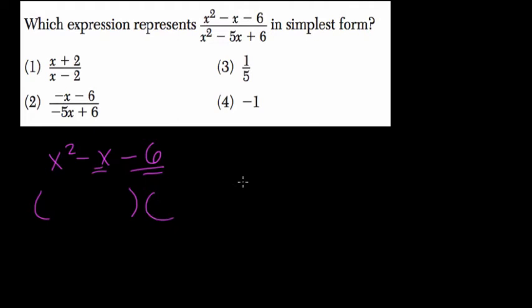What factors of negative 6 add to negative 1? Well, negative 3 times 2 is negative 6. If I add those two numbers, negative 3 and 2, I get negative 1. So I'm going to use those two.